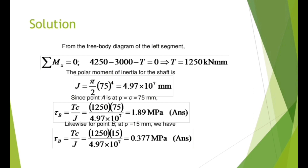Since point A is at rho = c = 75 mm, tau_A = tc/j = 1250 × 75 / (4.97 × 10^7) = 1.89 MPa. Likewise, for point B at rho = 15 mm, tau_B = 0.377 MPa.